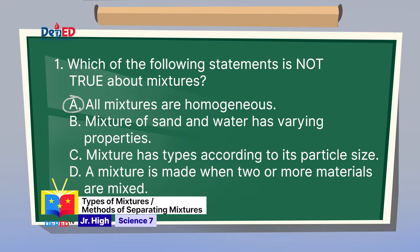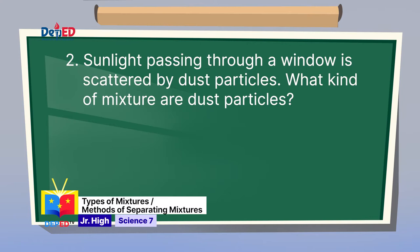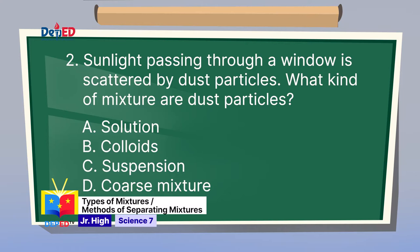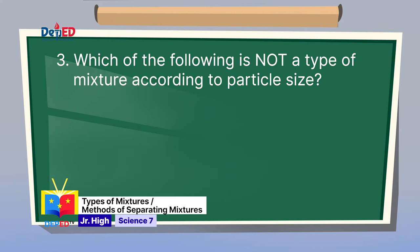Number 2: Sunlight passing through a window is scattered by dust particles. What kind of mixture are dust particles? A. Solution. B. Colloids. C. Suspension. D. Coarse mixture. Dust particles are known as colloids. The correct answer is letter B.